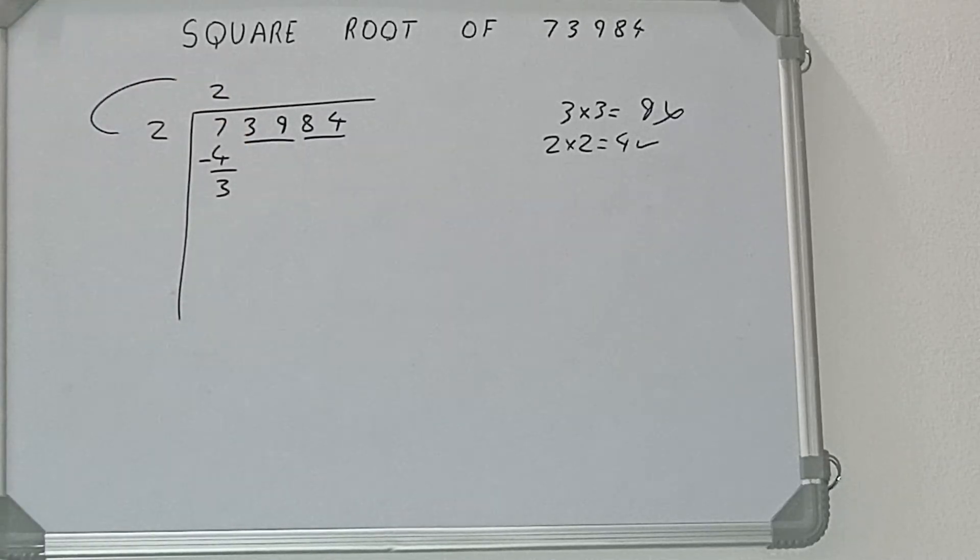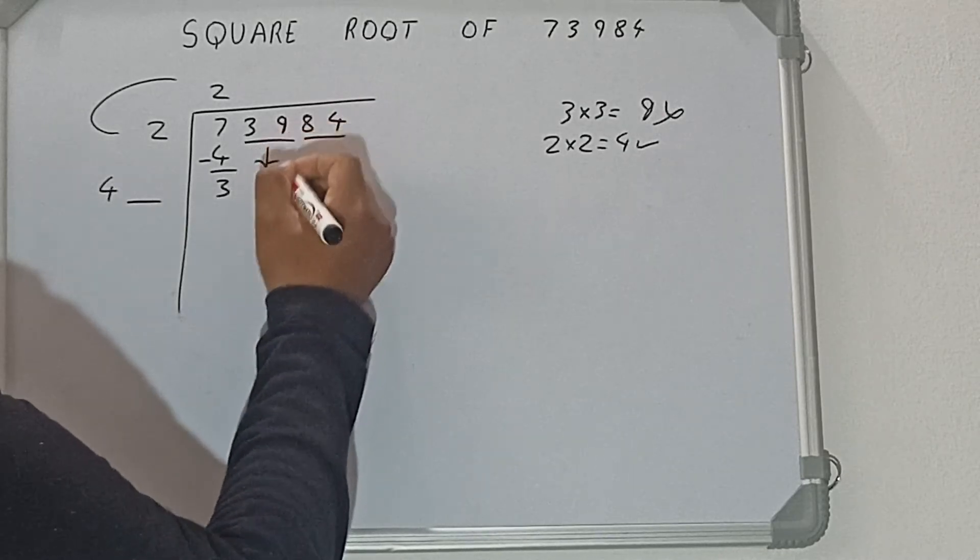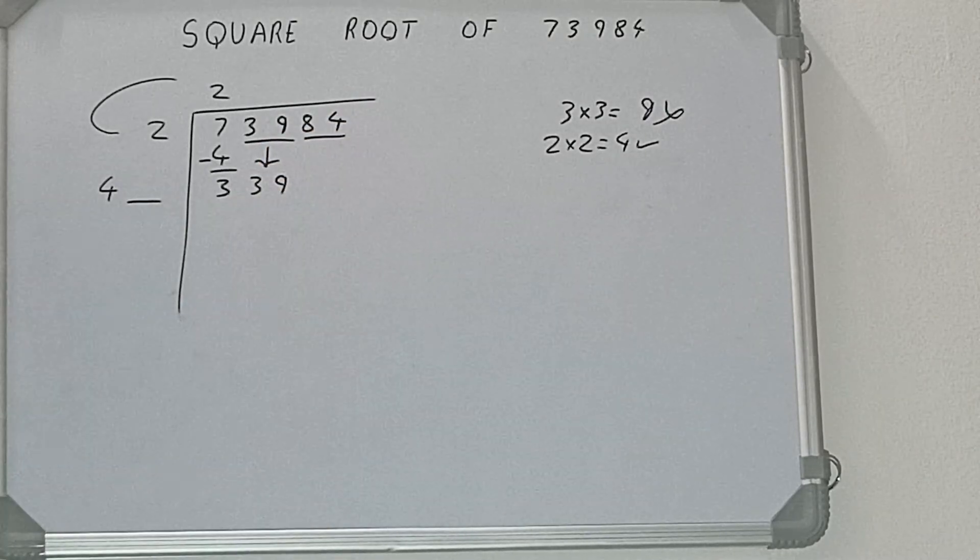So add both, 2 plus 2 will be 4. Write it here and keep one digit extra. Now we need to make this number big, so bring the next pair down and it will be 339.